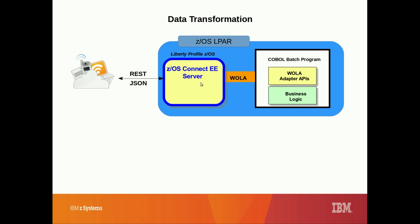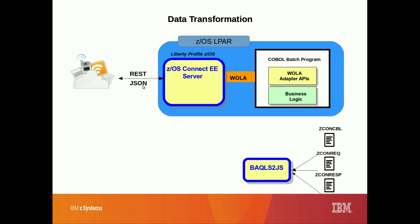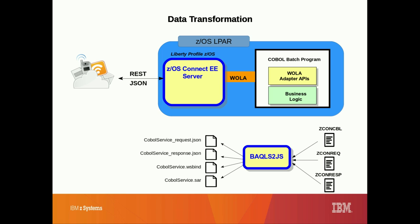Then on the response, ZOS Connect will convert the COBOL copybook data into a JSON message format that the REST clients know how to handle. We enable this capability using the BAQLS2JS utility, which comes with ZOS Connect, and which uses the COBOL request and response copybooks to create a pair of JSON schema files for the request and response, a bind file to map the JSON and back-end data structures, and a service archive file, which we'll use later on to create our APIs in Part 2 of the demo.